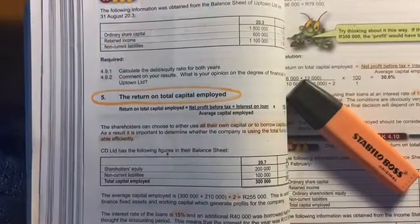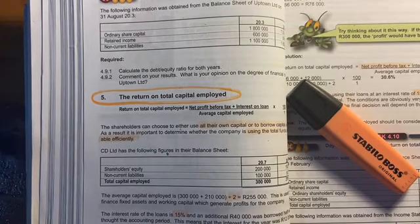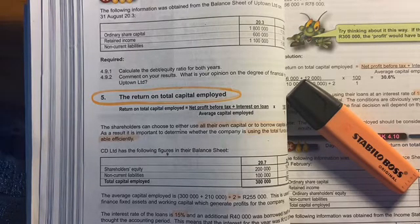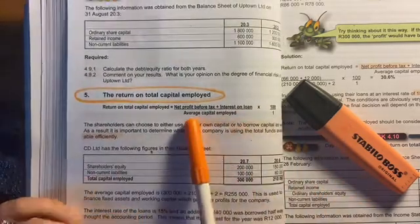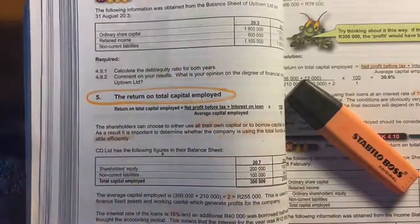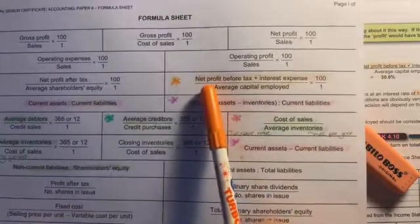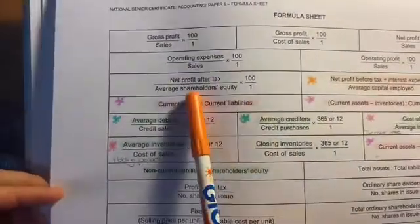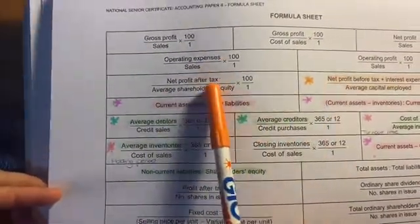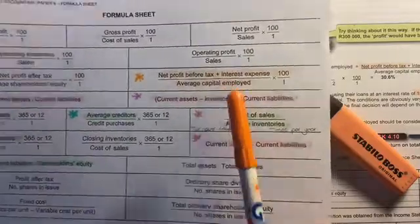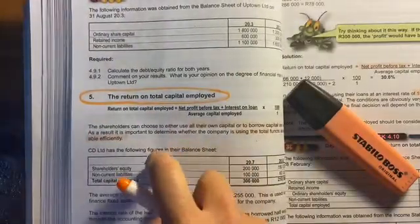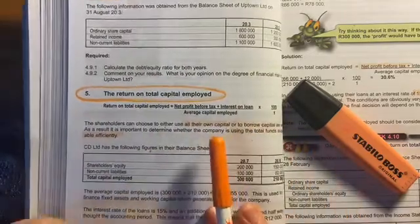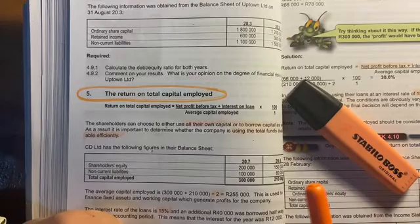Okay, so this is number five: return on total capital employed. Just know that this one is directly related to the gearing I just spoke about. The formula is quite complicated, but you don't actually have to study it. It is on your notes—I'll show it to you over here. It says net profit before tax, interest, and so on. Just be careful, there's another one you might confuse it with. This one's after tax—we are now looking at this one specifically. Just to break it down, you're going to look at the capital that you've employed.